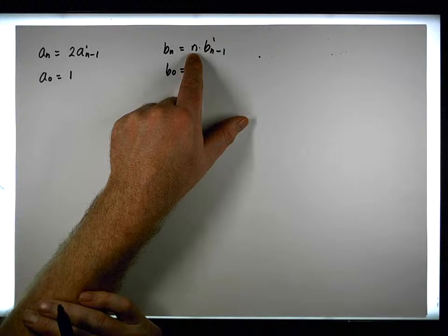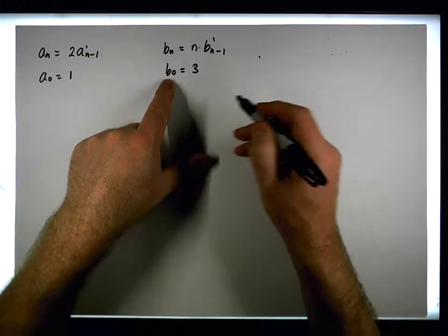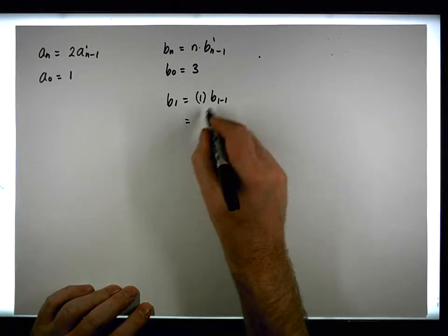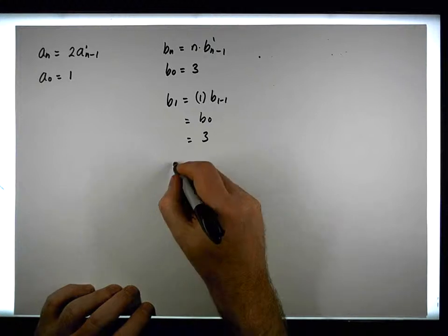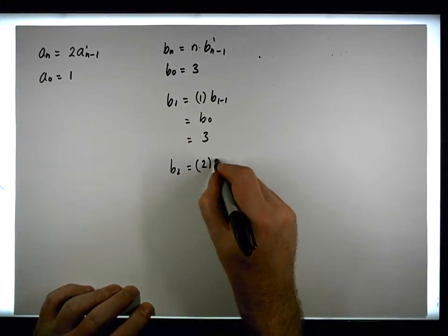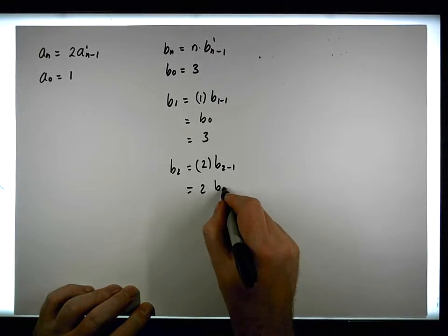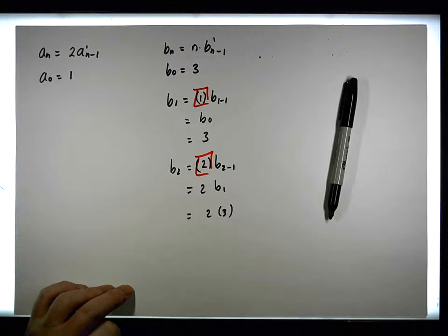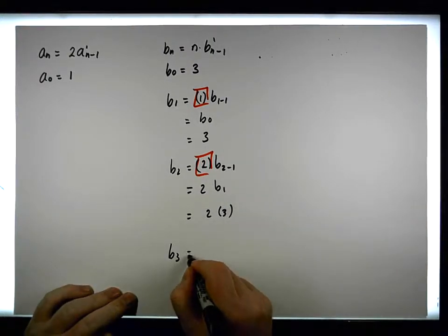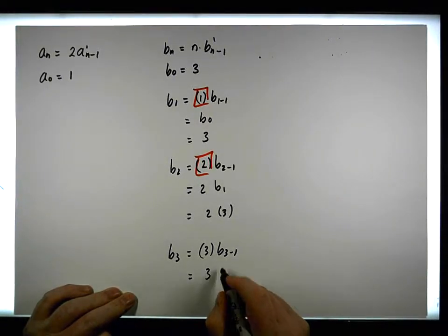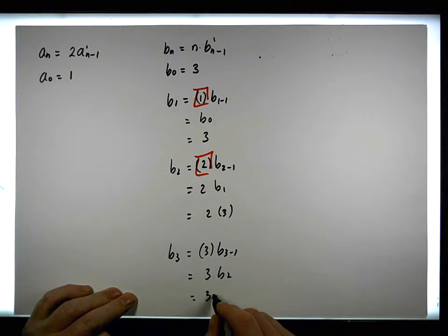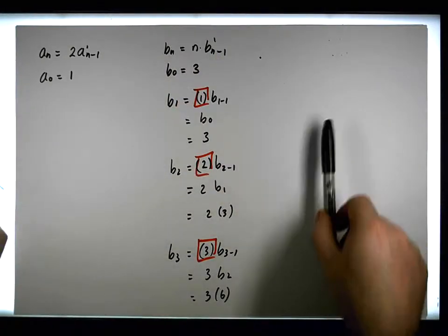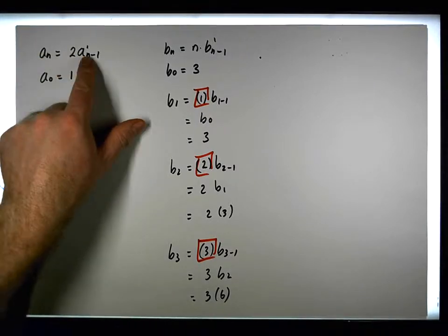However, it doesn't have constant coefficients because the coefficients change depending on which value we're calculating. For example, b(1) = 1 × b(0) = 3; b(2) = 2 × b(1) = 2 × 3 = 6; and b(3) = 3 × b(2) = 3 × 6 = 18. Notice the coefficient is 1 in the first case and 2 in the second — the coefficients are changing.